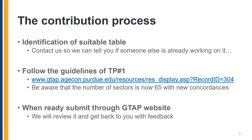You should be aware that the number of sectors that we consider now are 65 and that we have new concordances. When you are ready to submit your data, you can do so through the GTAP website. What we do then is review it and get back to you with feedback.